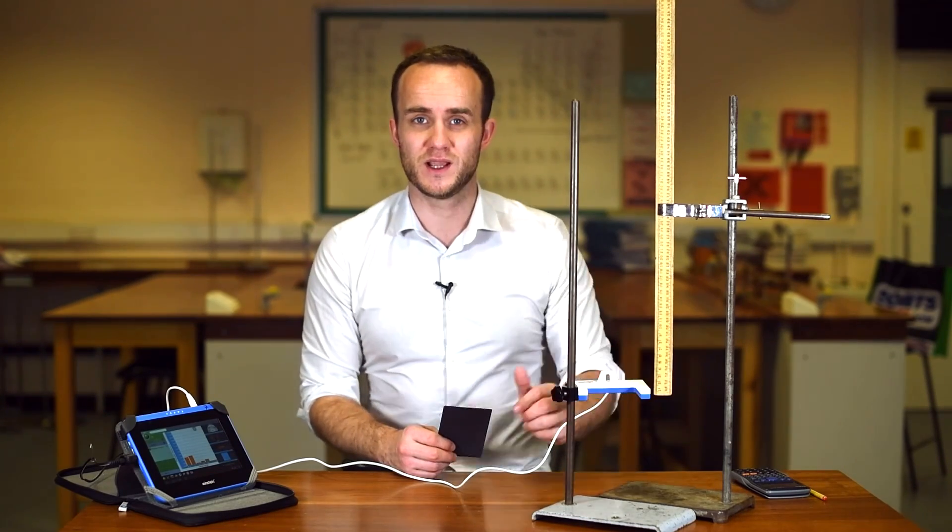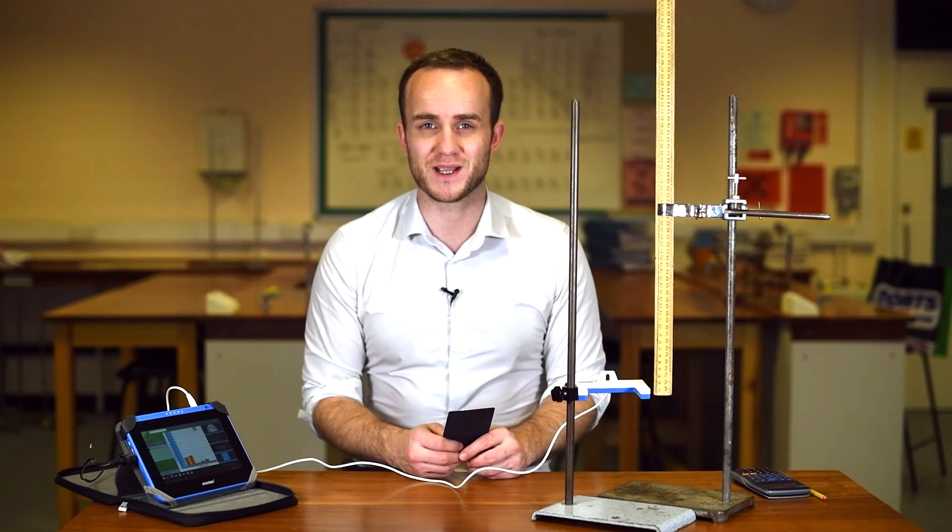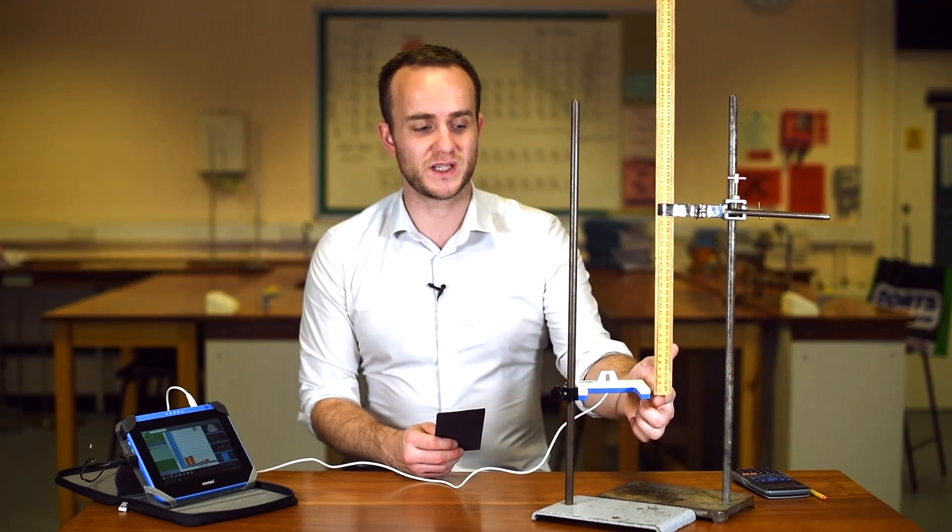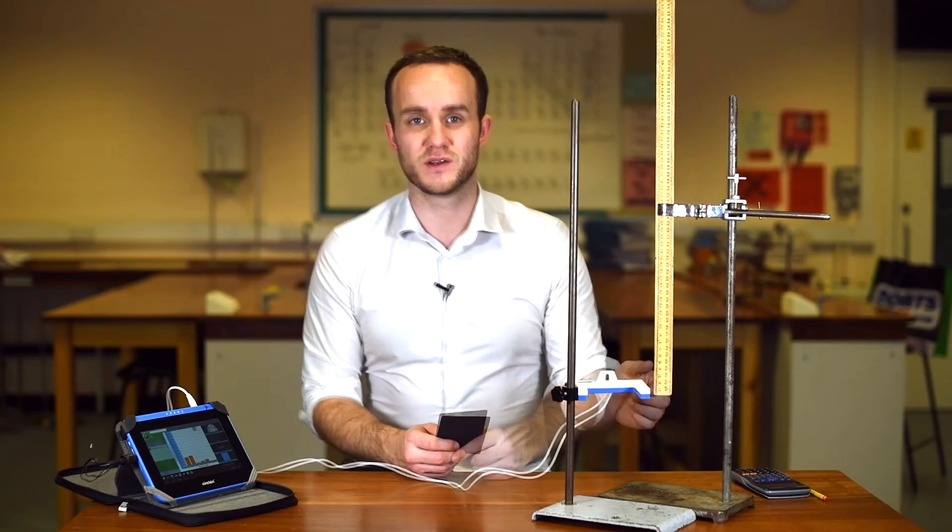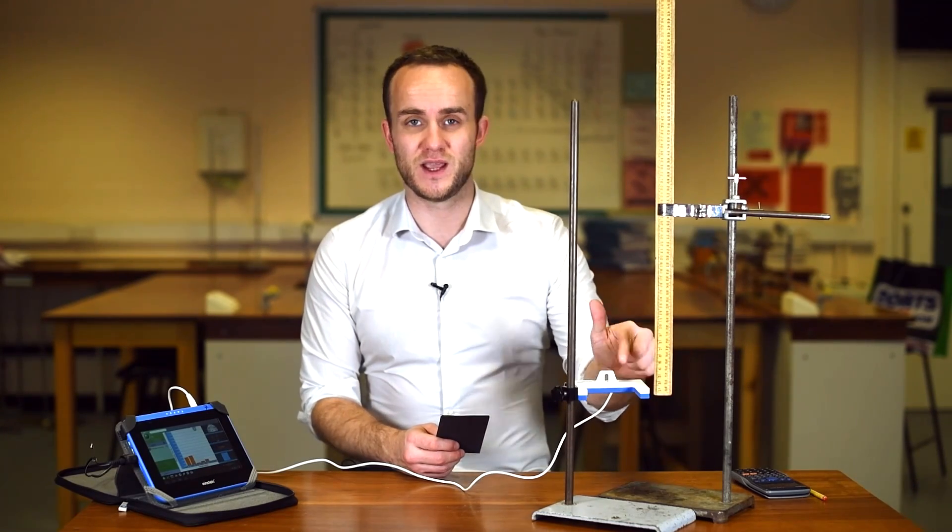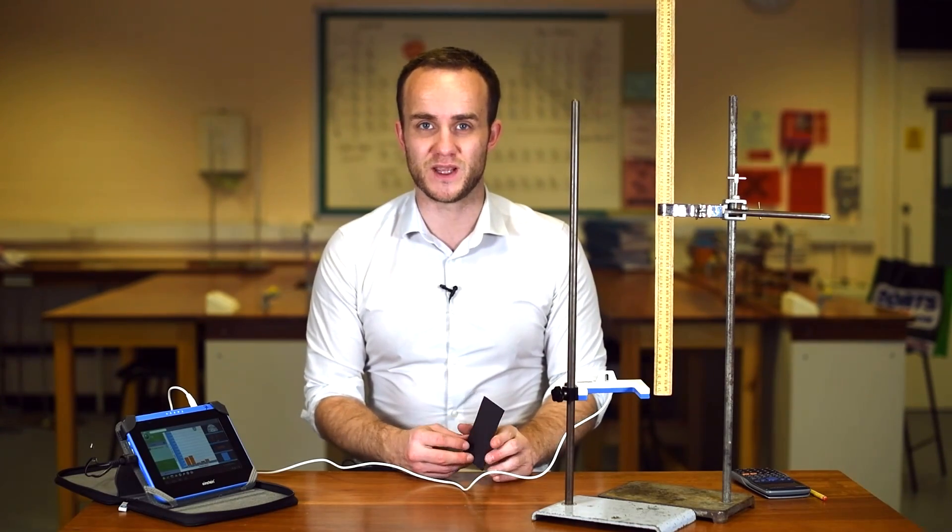And I have my ruler clamped very close to avoid any parallax error and the like. I've clamped it so the zero is right at the midpoint, so the bottom of the ruler is in line with the beam itself in the light gate.